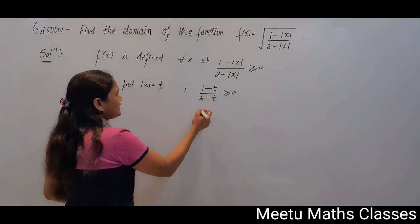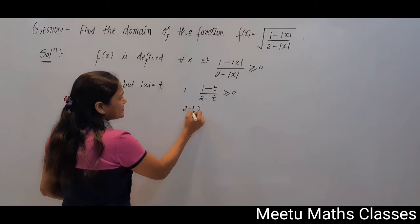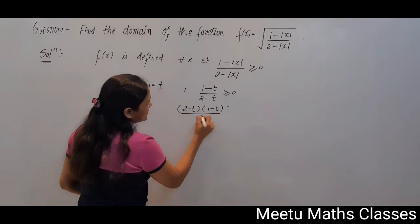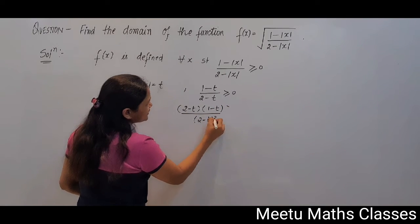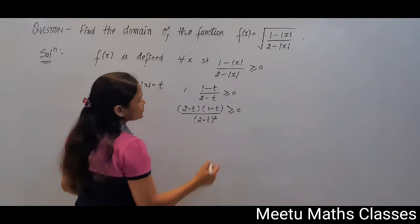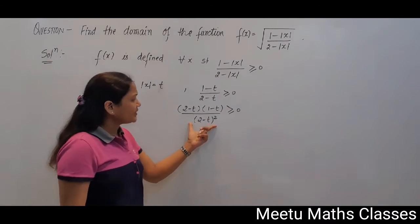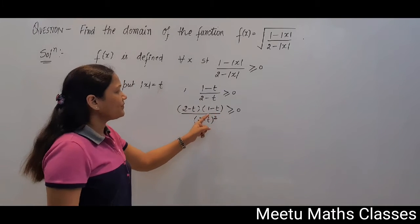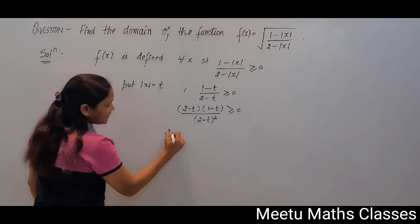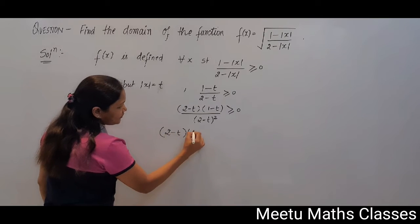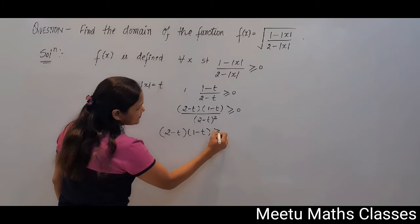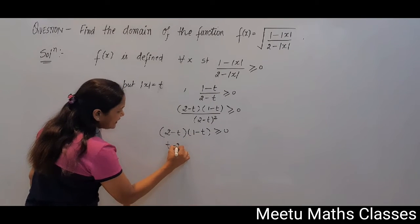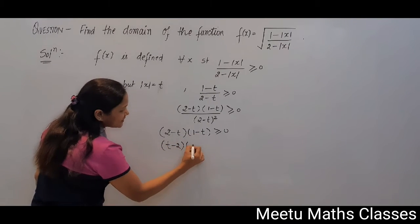Now multiply and divide by (2 - t). This quantity is greater than or equal to 0, and you have to find the values of t. Now your denominator function is always positive, so this function is positive when the numerator is positive — when (2 - t)(1 - t) is positive, then it will again become positive.